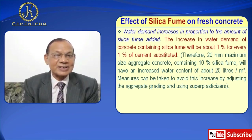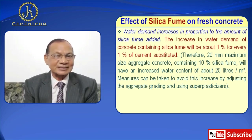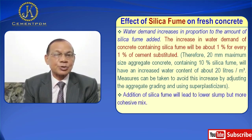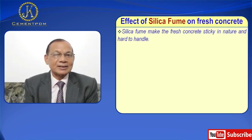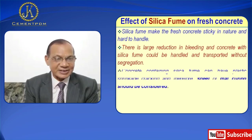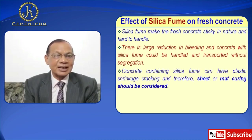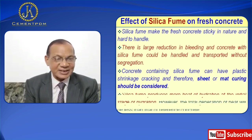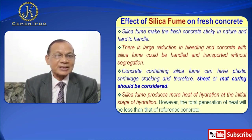Measures can be taken to avoid this increase by adjusting the aggregate grading and using superplasticizers. The addition of silica fume will lead to lower slump but a more cohesive mix. Silica fume makes concrete sticky in nature and harder to handle. There is a large reduction in bleeding, and concrete with silica fume could be handled and transported without segregation. Concrete containing silica fume can have plastic shrinkage cracking, and therefore sheet or mat curing should be considered.